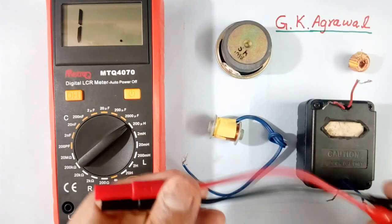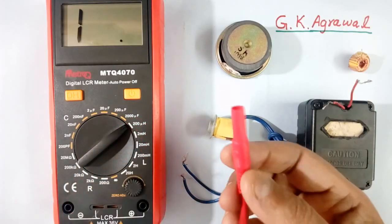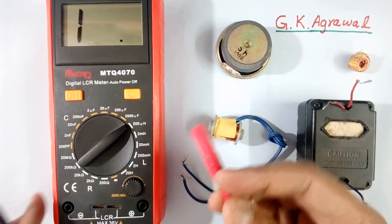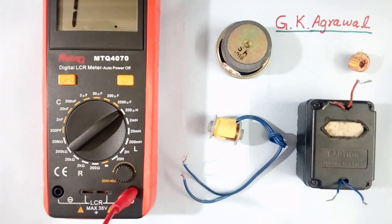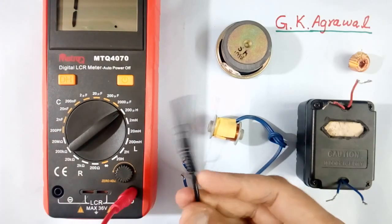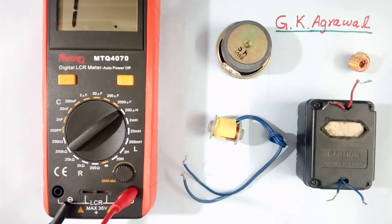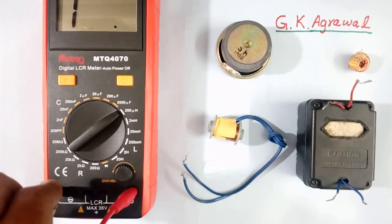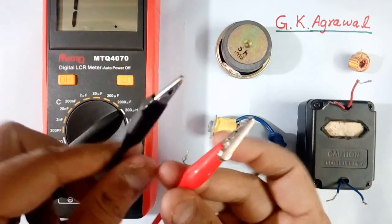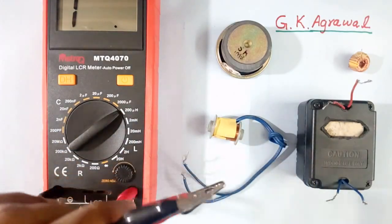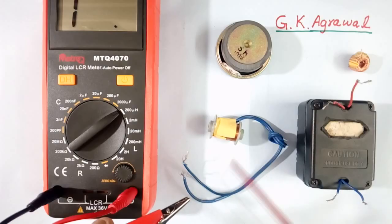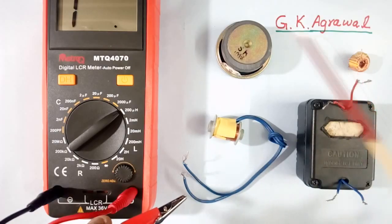Now first I will connect this probe — this red one I will connect to the plus terminal, and this black one I will connect to the minus terminal of the component which we want to measure.